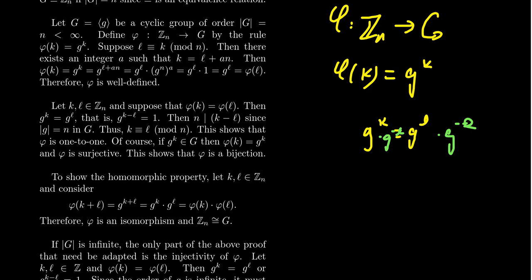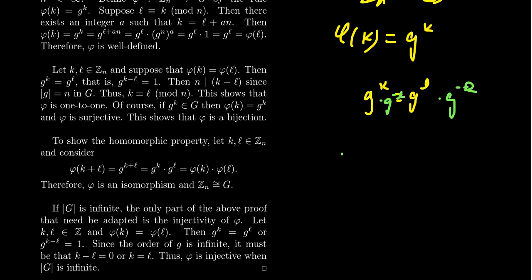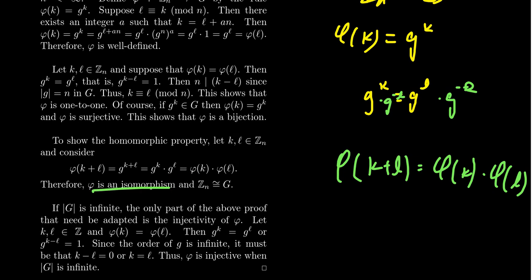To show that it's an isomorphism, we have to also show that it satisfies the homomorphic property. We have to show that phi of k plus l is equal to phi of k times phi of l. Well, phi of k plus l, addition is the operation of Z_N here. Phi of k plus l means g to the k plus l. But by exponent properties, this becomes g to the k times g to the l, which gives you phi of k times phi of l. And so the homomorphic property is immediate. It's almost natural in a manner of speaking. And this proves that phi is an isomorphism. Therefore, Z sub n is isomorphic to G, where G was a cyclic group of order n.